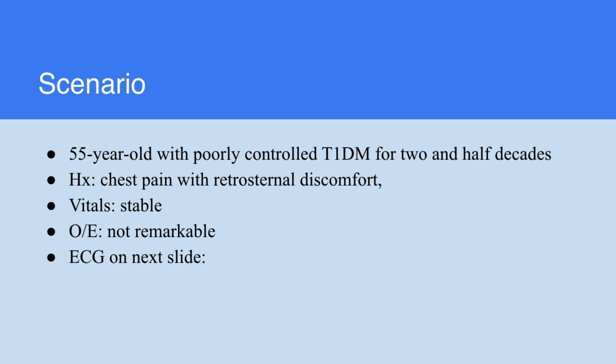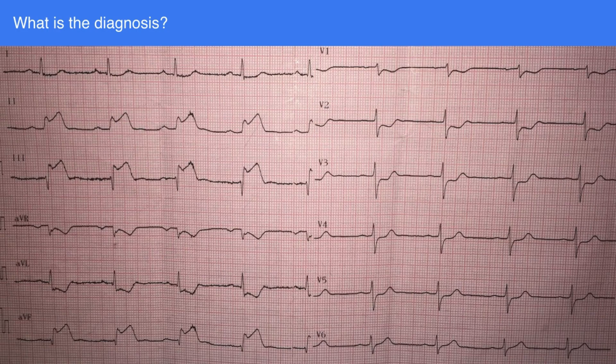So what about myocardial infarction? A 55-year-old with poorly controlled type 1 diabetes for two and a half decades, presenting with chest pain with retrosternal discomfort. Her vitals were stable and on examination nothing remarkable. Looking at the ECG carefully, there are P waves preceding all the QRS complexes, so this patient is in sinus rhythm.